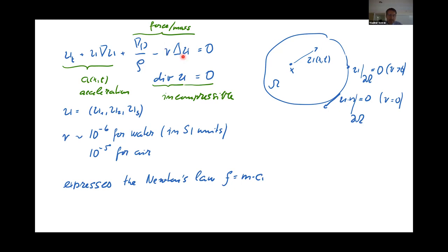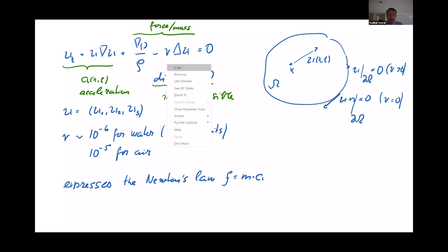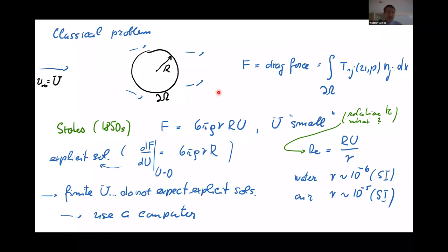These are the forces due to inner friction in the fluid. In many cases, for example for water and air, the viscosity is very low in SI units, so it makes sense to consider the Euler equation when friction is zero. Let's consider a classical problem: a ball of radius r moving through the fluid at velocity u, and we want to calculate the drag force — the resistance force. This was considered by Newton in his Principia in 1687.